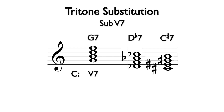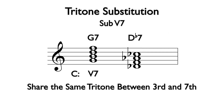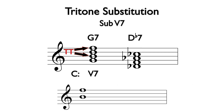A tritone substitution is an effective replacement for a primary or secondary dominant because both chords share the same tritone interval between the third and seventh. A G7 chord has a tritone interval between the third, B, and the seventh, F. In a typical resolution, these two notes would resolve inward with the B leading to C and the F leading to E, giving us the root and third of the one chord.